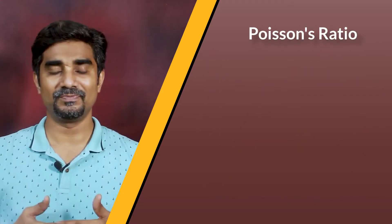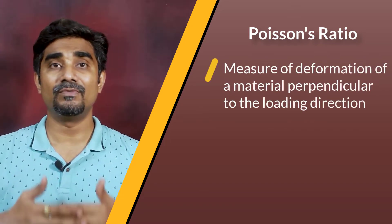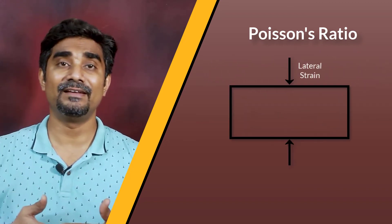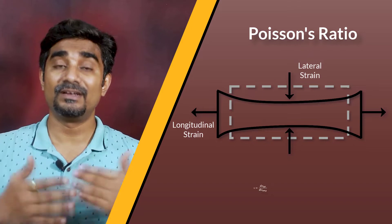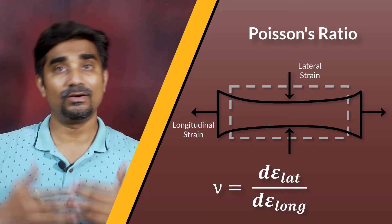The second important material parameter is Poisson's ratio. It is a measure of the deformation of a material perpendicular to the loading direction. It can be defined as the ratio of transverse or lateral strain to the axial or longitudinal strain.